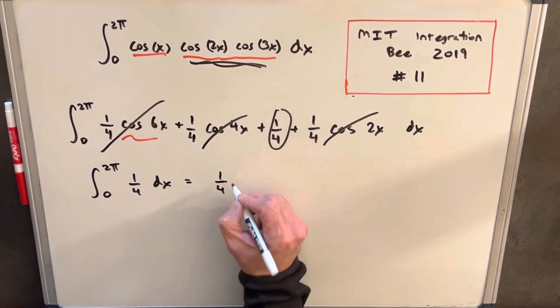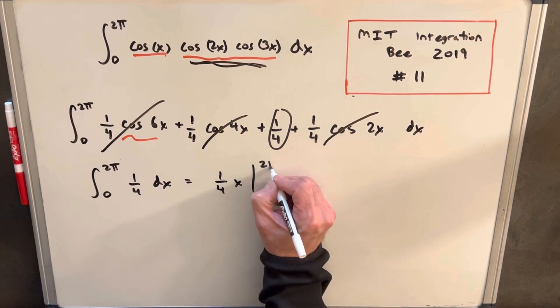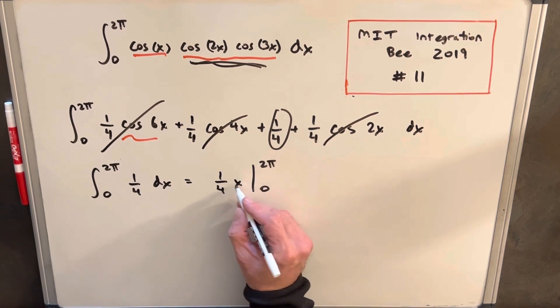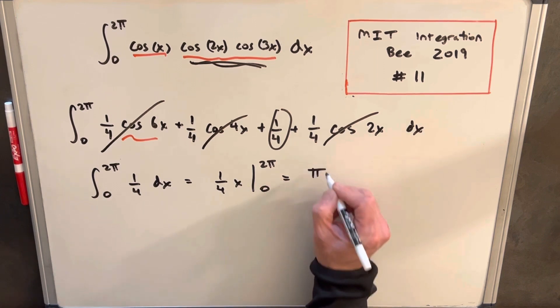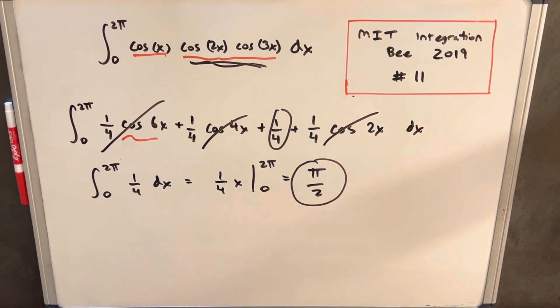So we're going to integrate, and we're going to have one-fourth x from 2 pi to 0. We'll just plug that in. Our 0 is going to be 0, so we're just going to look at one-fourth times 2 pi, and that's just going to be pi over 2. And that's it. That's going to be our answer. This was MIT Integration Bee 2019, problem number 11. Thanks for watching. Please like and subscribe. Have a good day.